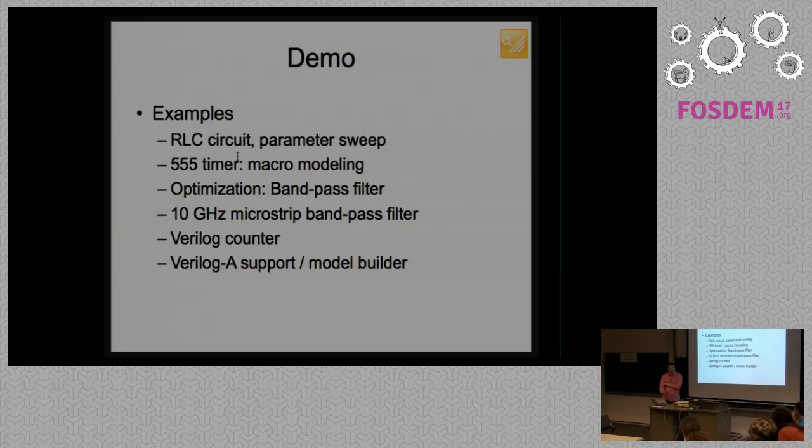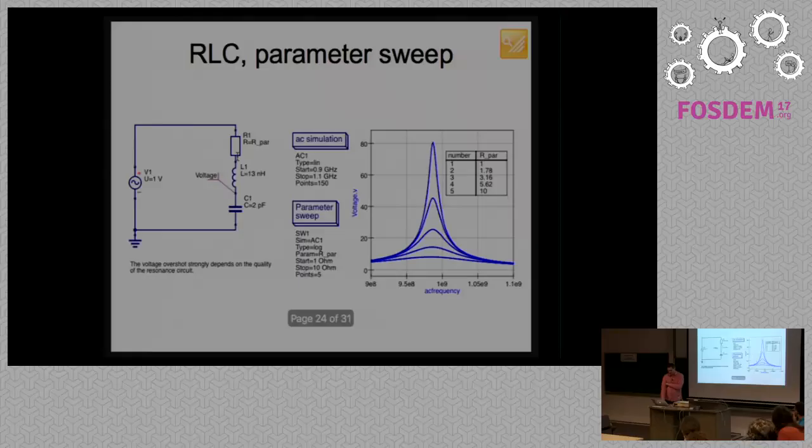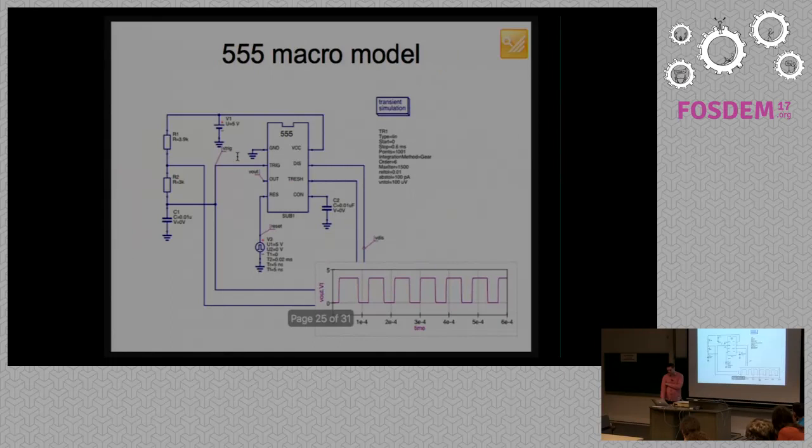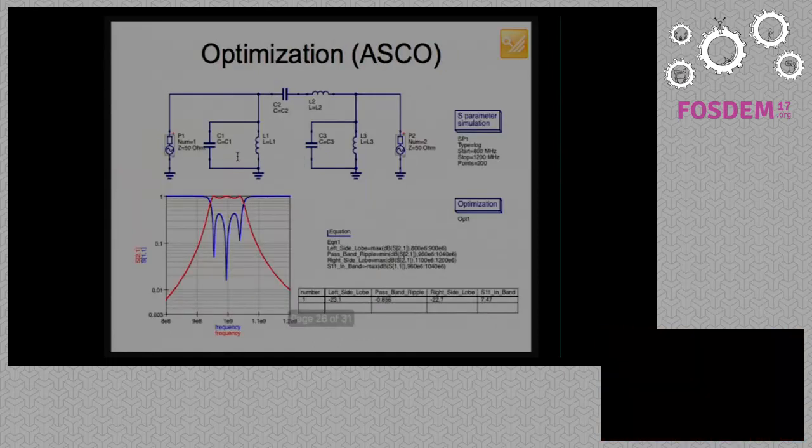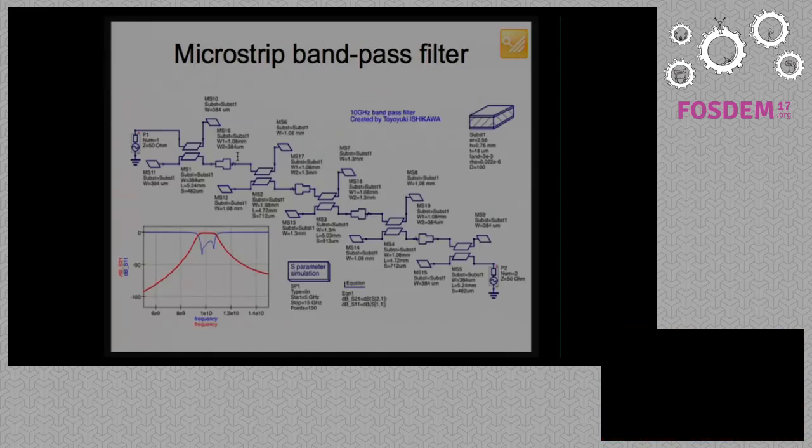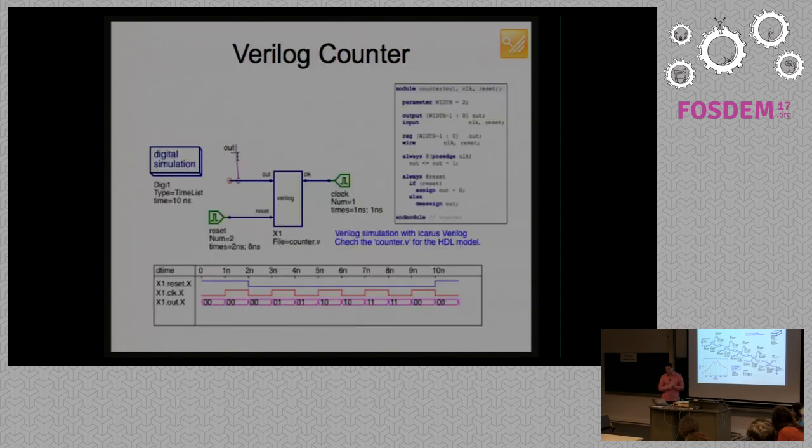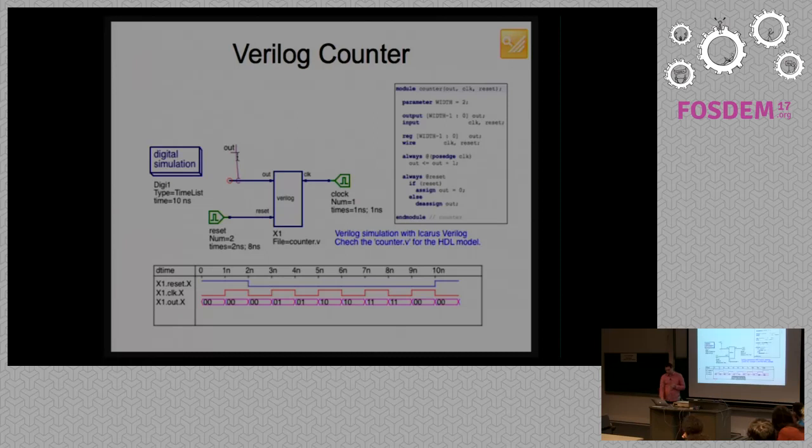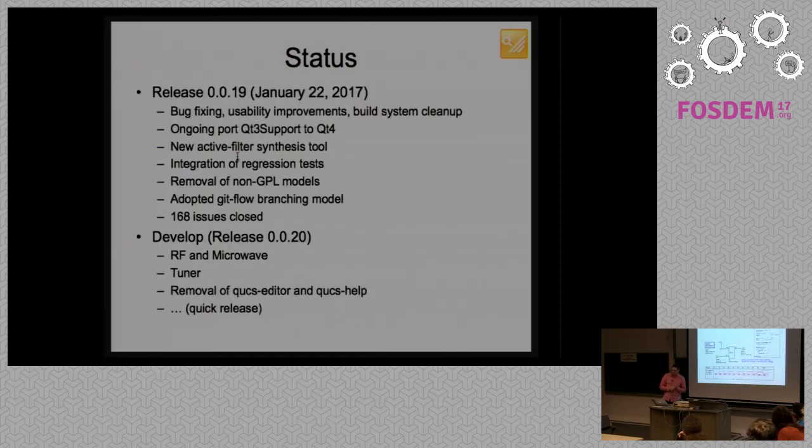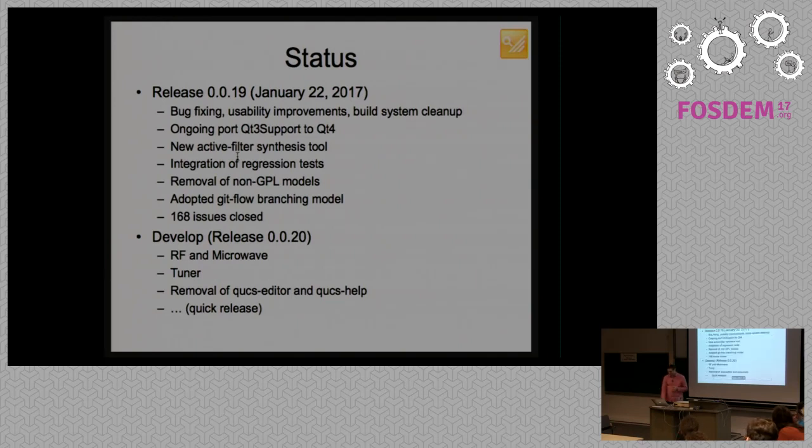These are the same demos from last year. But, just for the ones that are here to get a feeling of how the tool behaves. So, I have this circuit with a parameter sweep. A macro model. Optimization. That's the kind of thing that will be interesting to see as an output to a layout tool. Because, these microstrips are basically traces on a PCB or another substrate. So, this is something that we could work with a layout tool to get it exported. That's quite interesting.